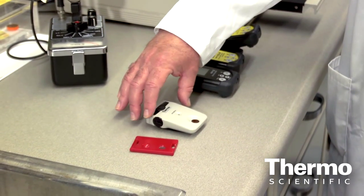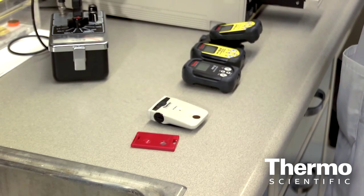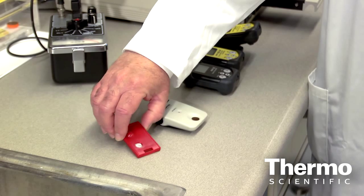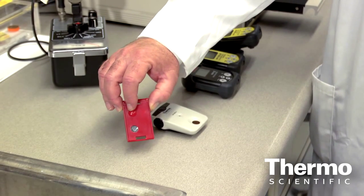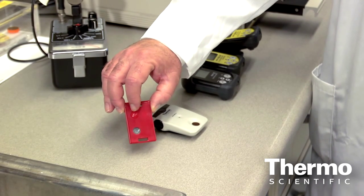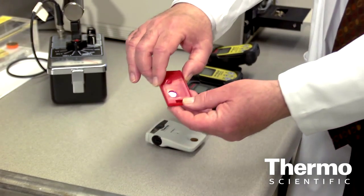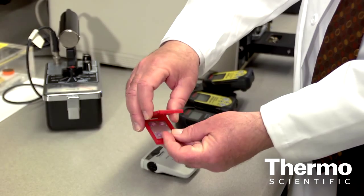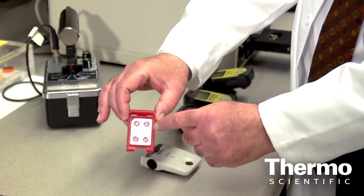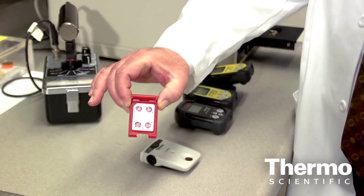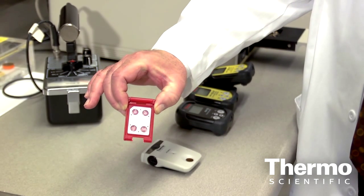These are personnel dosimeters which are used by radiation workers to monitor their personal dose. This type is called thermoluminescence dosimeter or TLD. It's made of aluminum card which has four crystals and it's called a passive dosimeter. It means that it has to be processed to be able to extract the dose information.